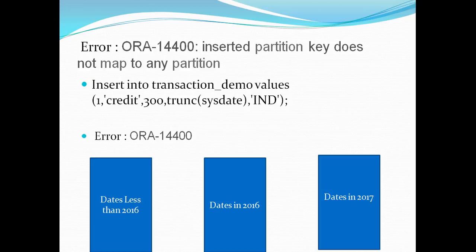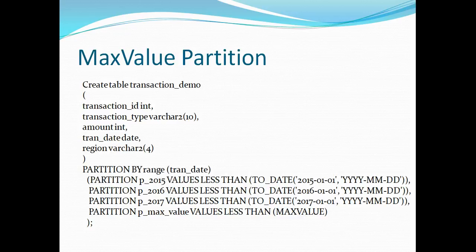If you have worked on a big data warehouse, you'll know that you can have issues with your partition key — null values or values that don't belong to any partition. In that case, you can create a partition called MAXVALUE, where all values that do not fall in the specified partitions will go. So if I insert a row for 2018, 2019, 2020, or 2099, all those rows will be inserted in this last P_MAXVALUE partition. The remaining syntax is exactly the same — we've just added this additional partition at the end.